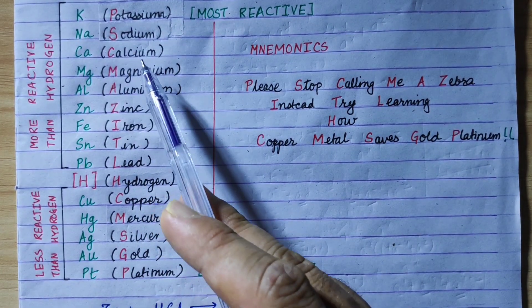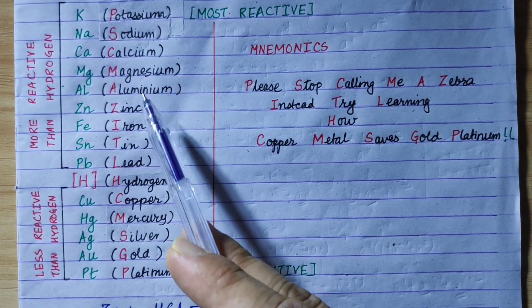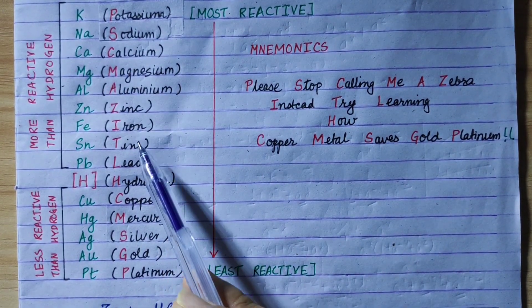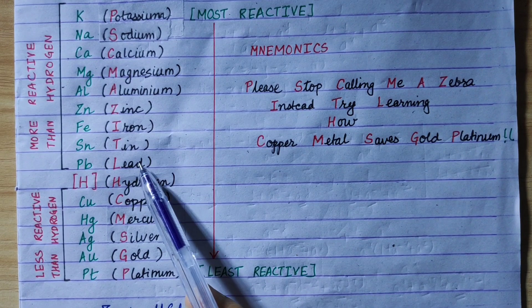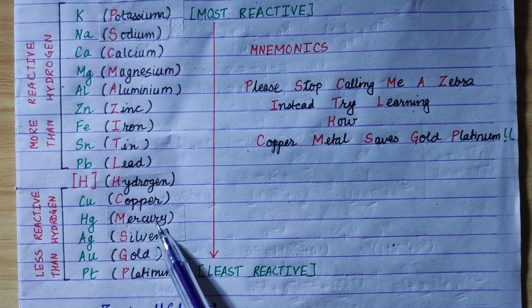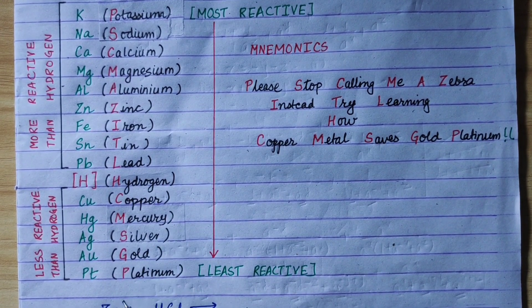The full series in order is: Potassium, Sodium, Calcium, Magnesium, Aluminium, Zinc, Iron, Tin, Lead, Hydrogen, Copper, Mercury, Silver, Gold.